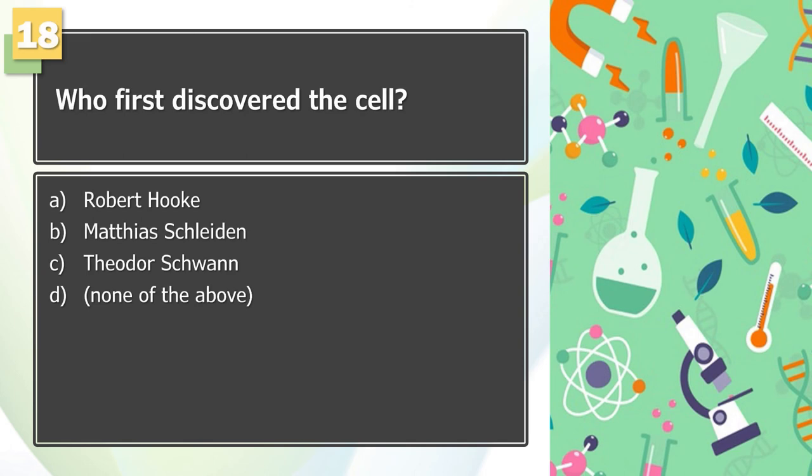Number 18: Who first discovered the cell? A. Robert Hooke, B. Matthias Schleiden, C. Theodore Schwann, D. None of the above.